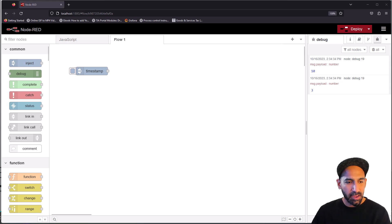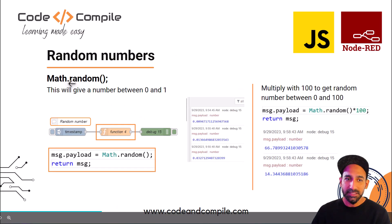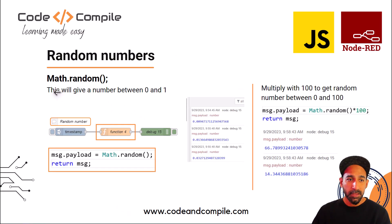This is what's explained in this slide - you have a function called Math.random. This will give you a number between zero and one. You have a function node and you can write Math.random, then return a message and you have this number. But if you want a number between zero to one hundred, you can multiply this by one hundred.